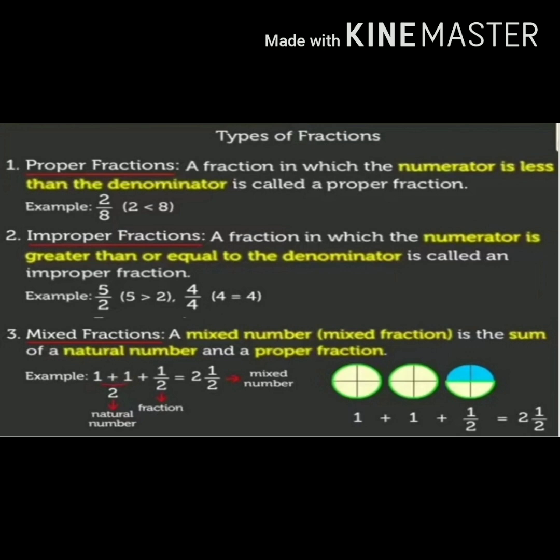Second, improper fraction. A fraction in which the numerator is greater than or equal to the denominator is called an improper fraction. For example, 5 upon 2 — here 5 is the numerator and 2 is the denominator, and 5 is greater than 2, therefore it is an improper fraction. Second example: 4 divided by 4. Here the numerator is equal to the denominator, therefore it is an improper fraction.